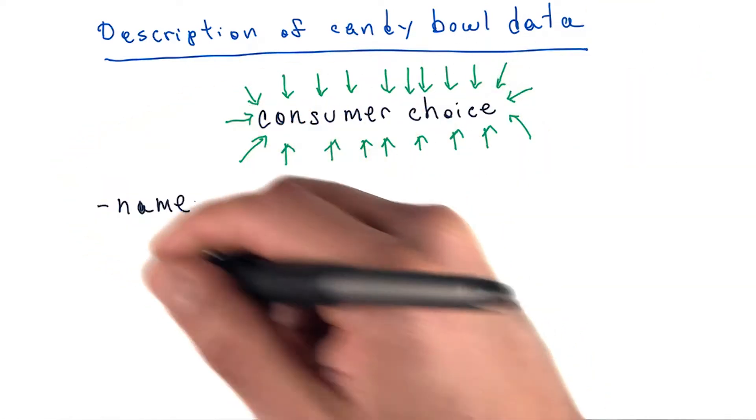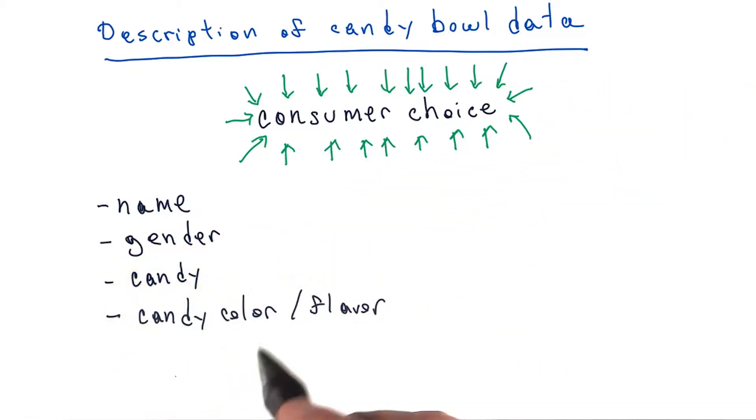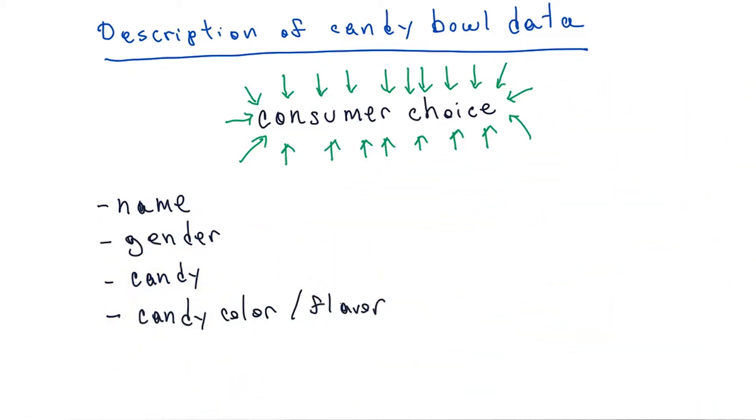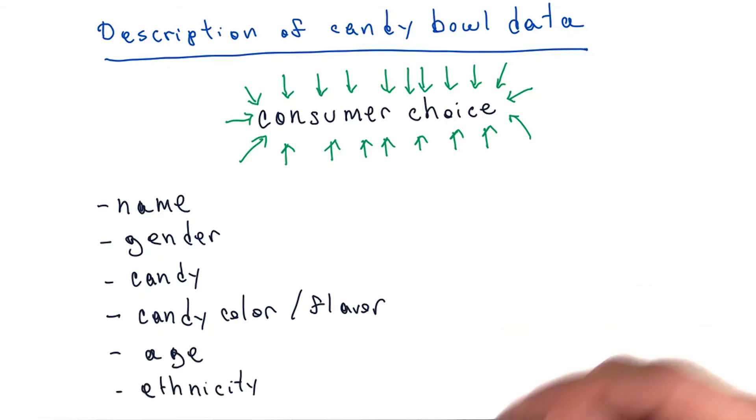...were name, gender, the type of candy. We lumped color and flavor into one giant category. Age of the person who's selecting, and ethnicity of the selector.